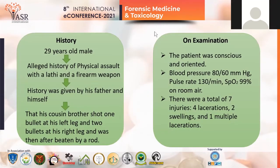There was a case that came to the AIIMS emergency — a 29-year-old male with the alleged history of physical assault with a lathe and a firearm weapon. The history was given by his father and himself that his cousin brother shot one bullet at his left leg and two bullets at his right leg, and was then beaten by a rod. On examination, the patient was conscious and oriented.